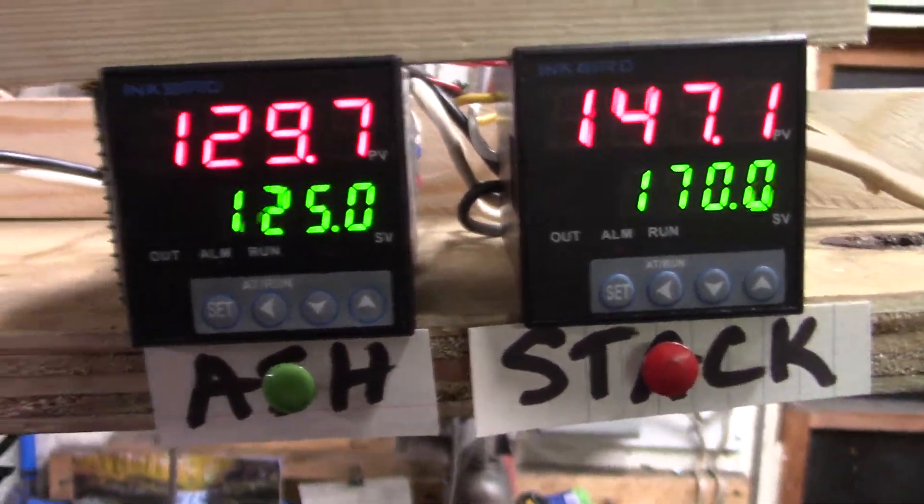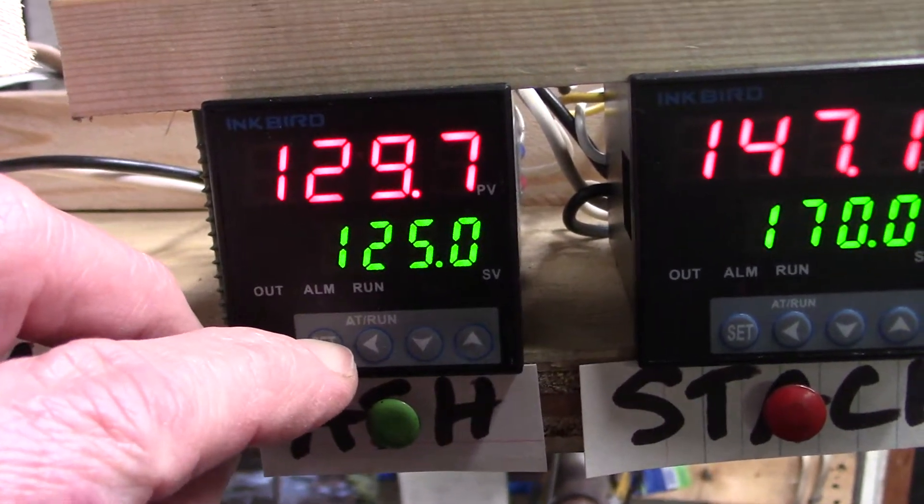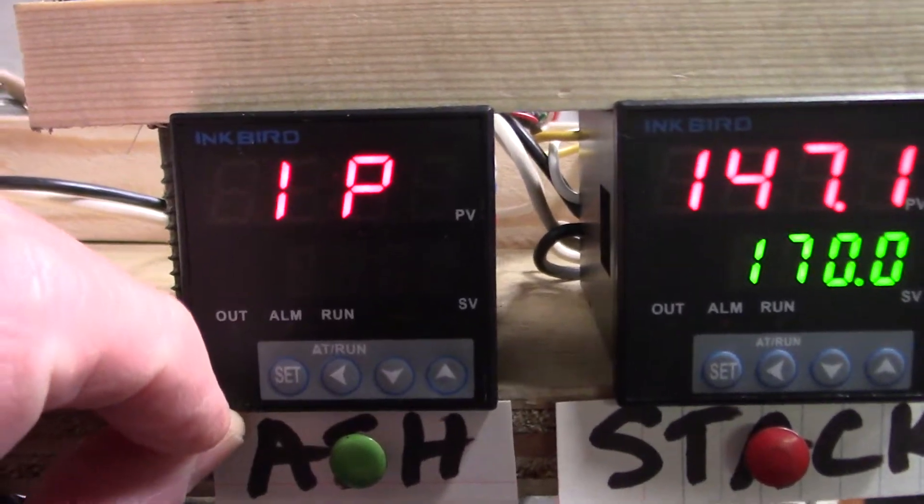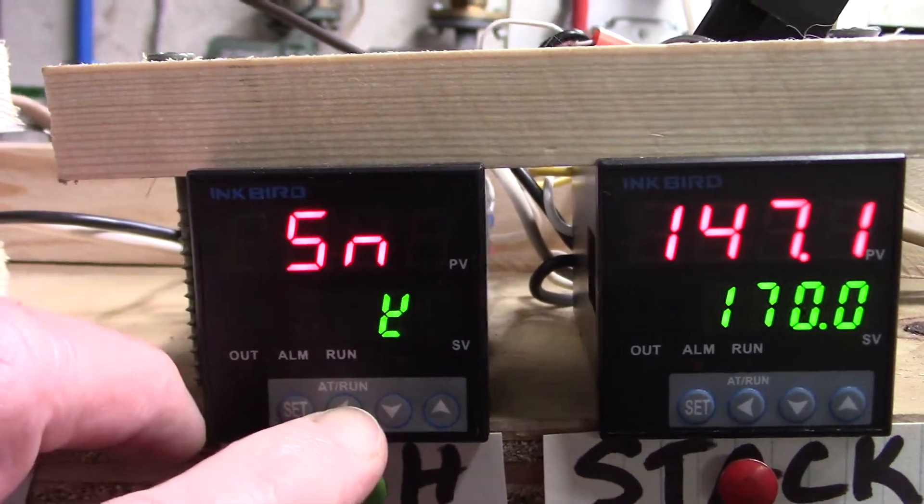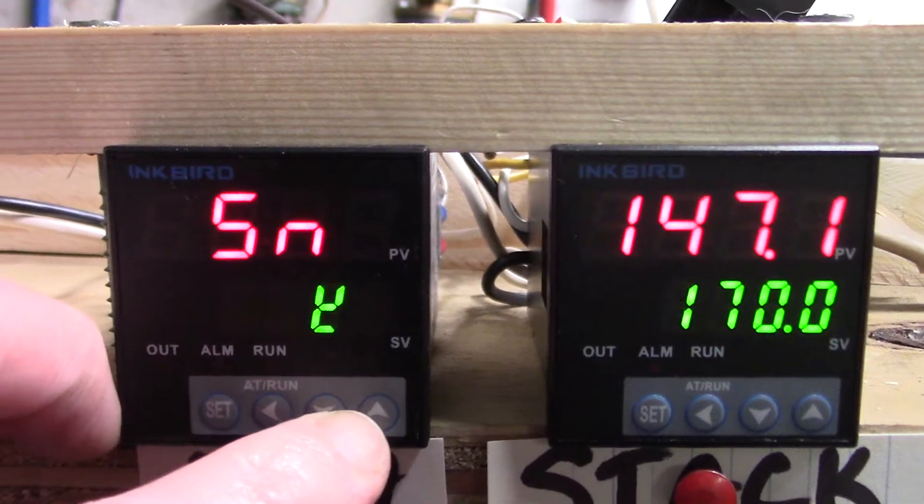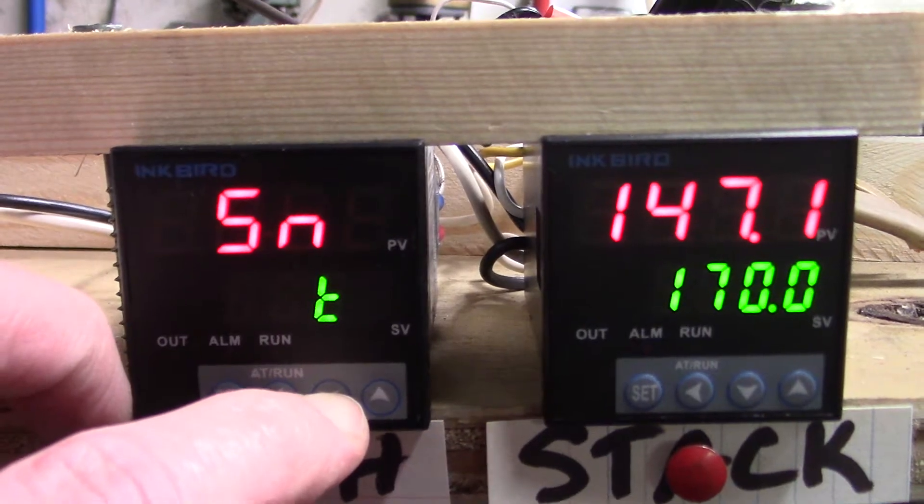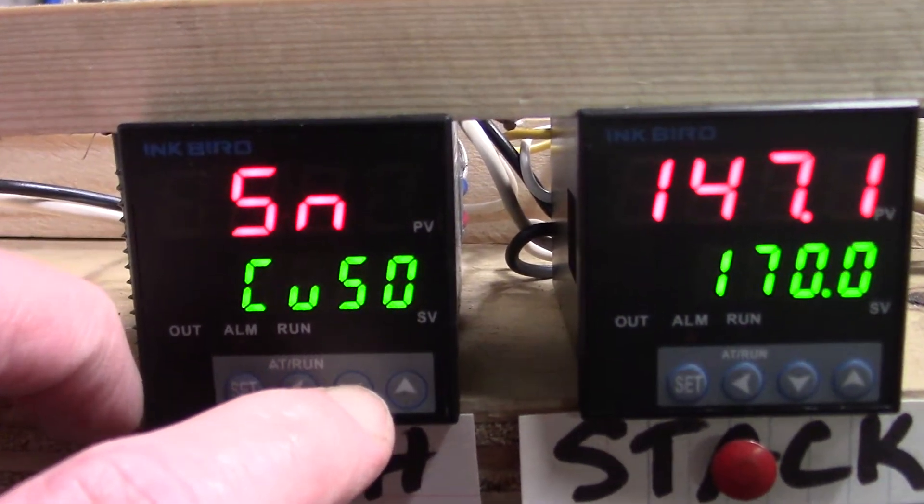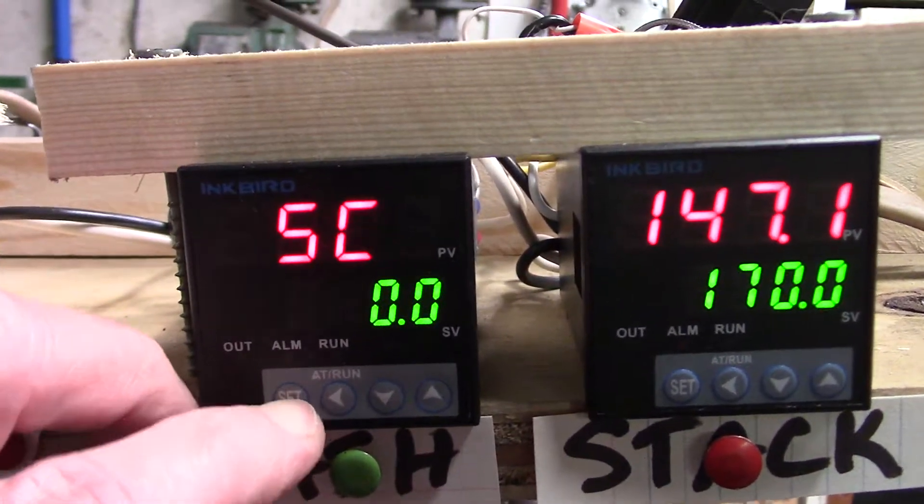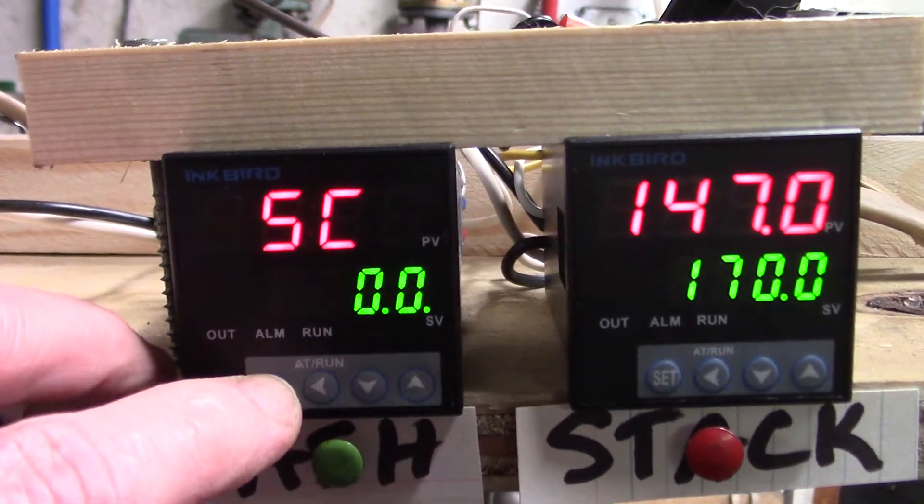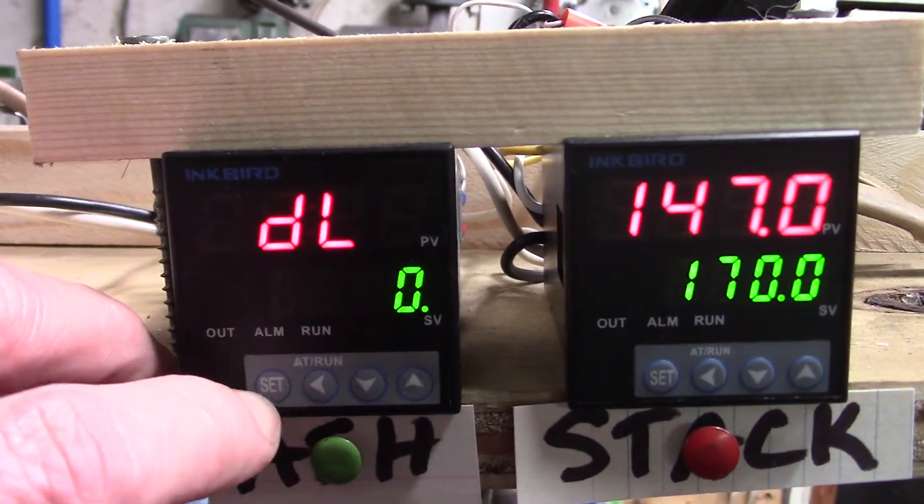So stand up here and look at this thing. To get into the menu we'll do the ashing one first. Hold the set button down for three seconds. Now you're in the IP menu. If you press the left arrow there you are, we're in Y which is a K thermocouple. You can change it, there's a chart in the instructions that tells you what means what, but we want Y.